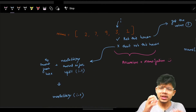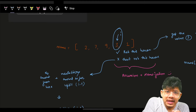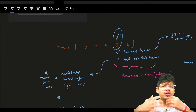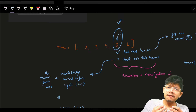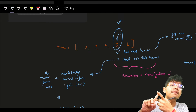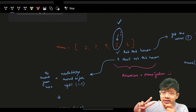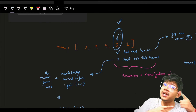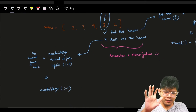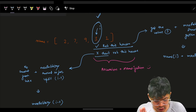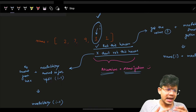If a robber is standing at the ith house, they have two options: rob this house or not rob this house. As soon as you hear 'two options at an index,' that should signal recursion. With two options — take or don't take, rob or don't rob — you can try all possibilities using recursion and also apply DP.